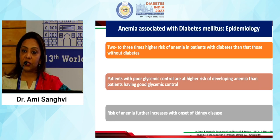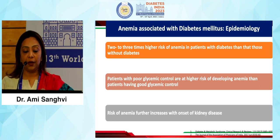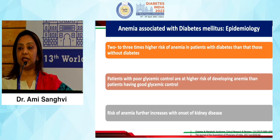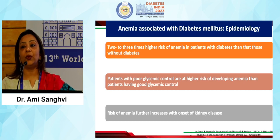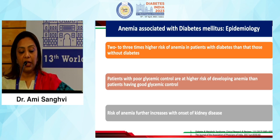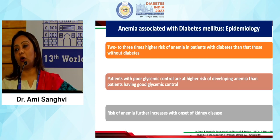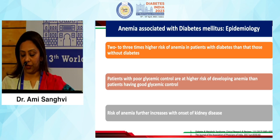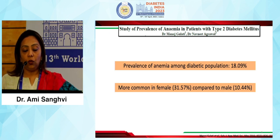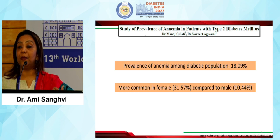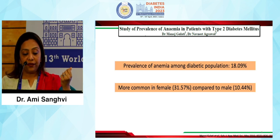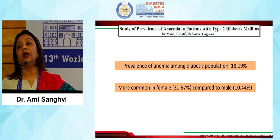Anemia is more prevalent in patients who have poor glycemic control compared to those with good glycemic control. It is a well-known fact that the risk of anemia is definitely higher with the onset of kidney disease. In our own population, the prevalence of anemia among the diabetic population is around 8%, with females encountering it more compared to their male counterparts.